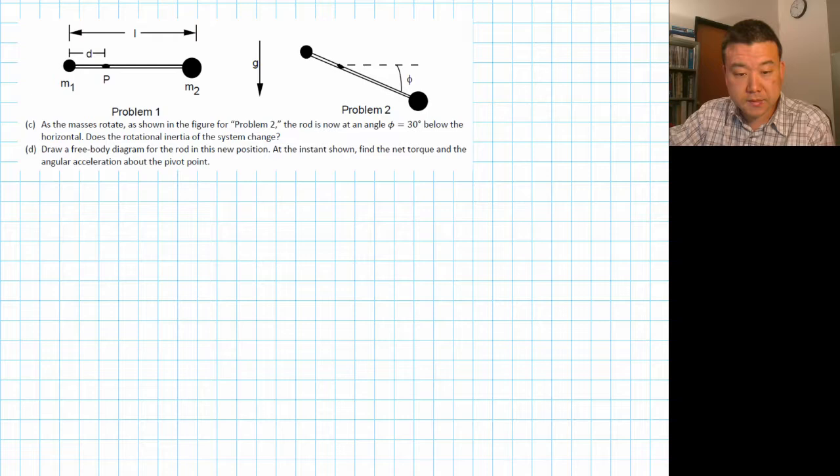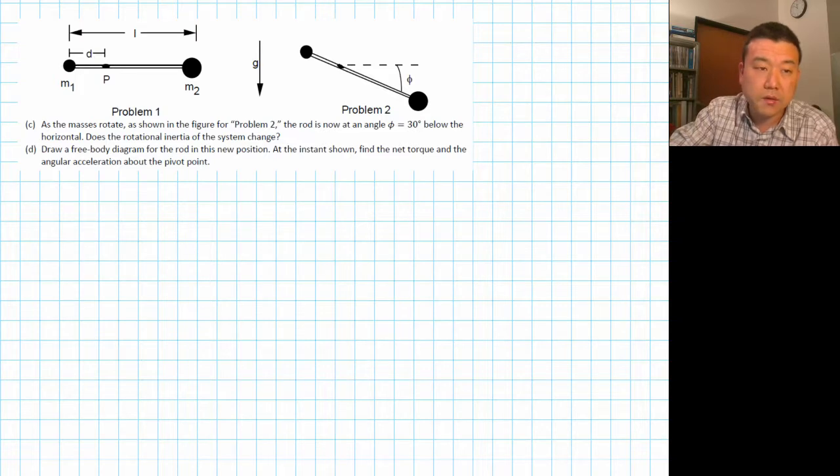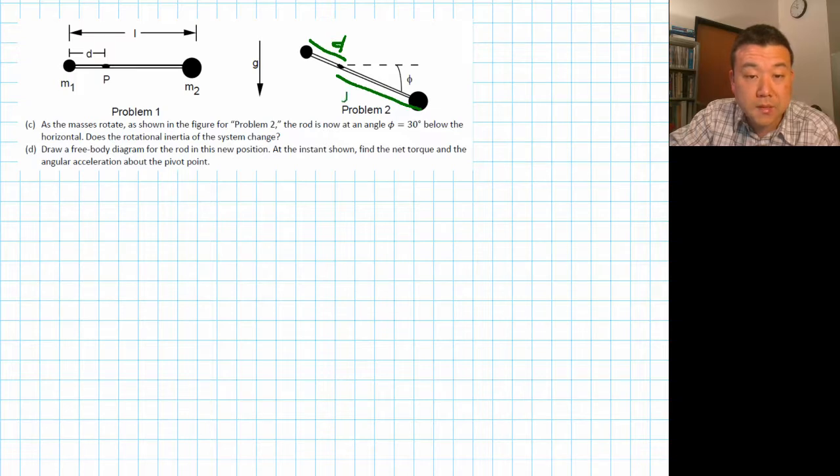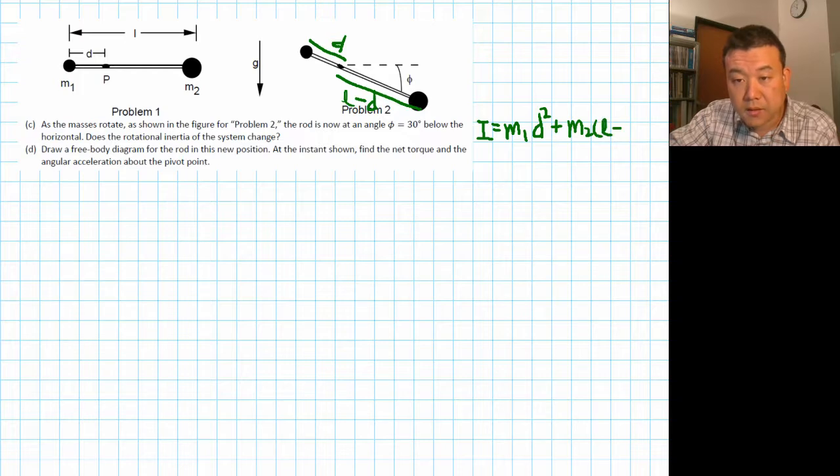All right. So the problem says that after the masses rotate for a while, they are in this position of problem 2. Part C asks if the rotational inertia of the system changes. When you think through it carefully, you should see that it doesn't. This distance from mass to the pivot point is still D. The horizontal distance is different, but the total distance is still D. And this distance from the pivot point to the mass is still L minus D. So the rotational inertia doesn't change. The rotational inertia of the system is still M1 D squared plus M2 L minus D squared.